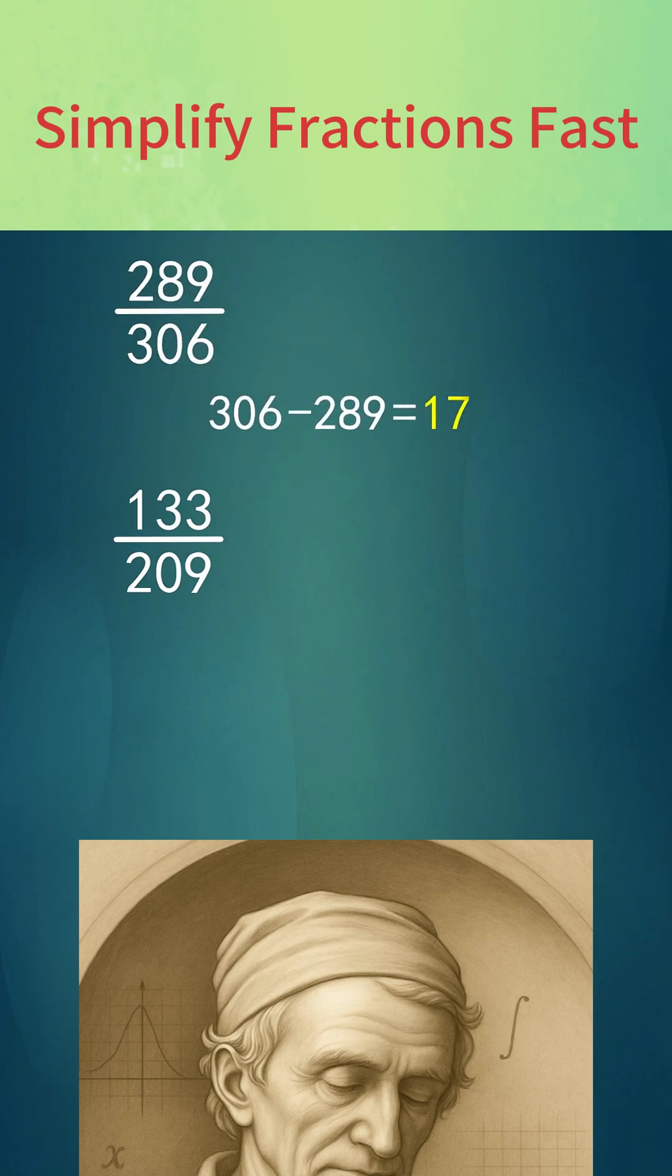17 is a prime number. Divide both numerator and denominator by 17, and you get the simplest fraction, 17 over 18.